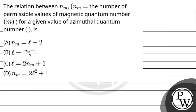Let's read the question. The question says: the relation between nm, which is the number of permissible values of the magnetic quantum number m for a given value of the azimuthal quantum number l. First option: nm = l + 2. Second option: l = (nm - 1) / 2. Third option: l = 2nm + 1. Fourth option: nm = l² + 1.